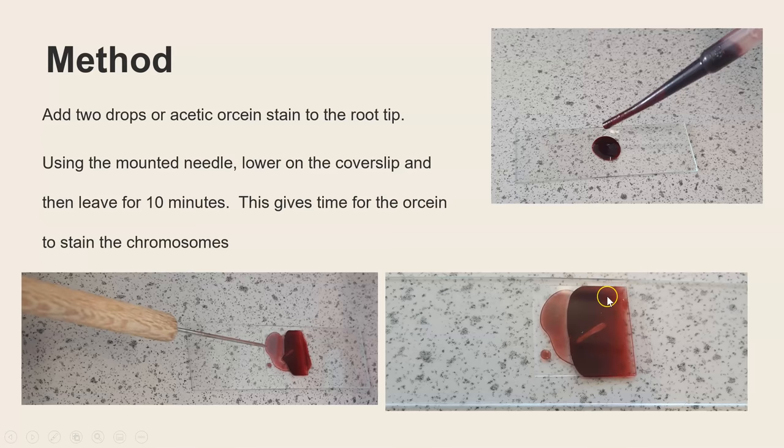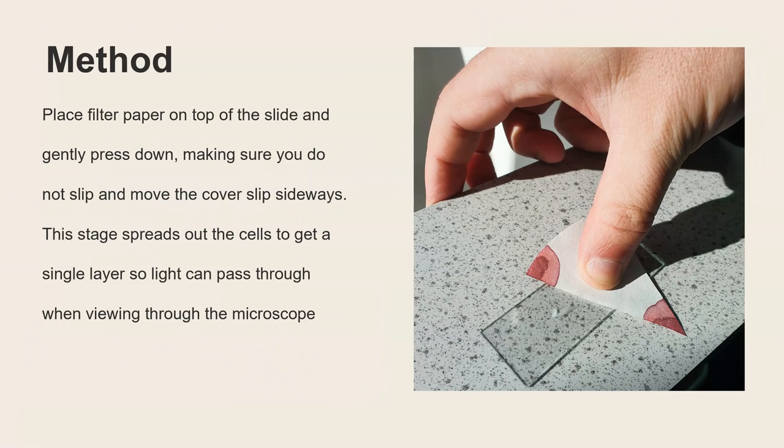Now when you leave it for 10 minutes the liquid will spread across that whole cover slip but if you do have any areas where the stain hasn't transferred to you can just put filter paper at the edges and that will draw the liquid along. The main thing is that during those 10 minutes the stain is covering our root tip because we want the chromosomes inside of the nuclei to become stained over that 10 minute period.